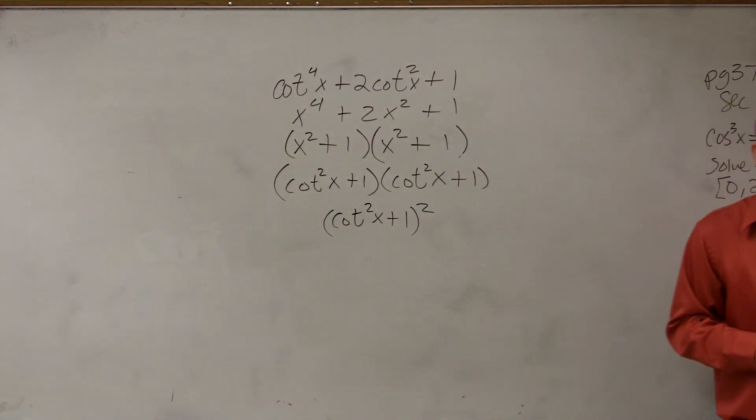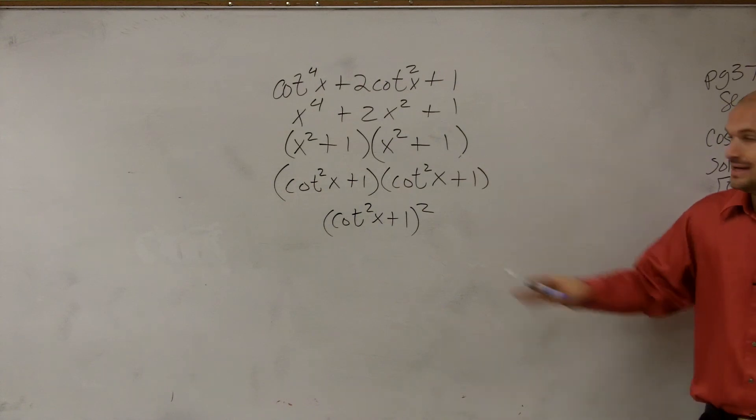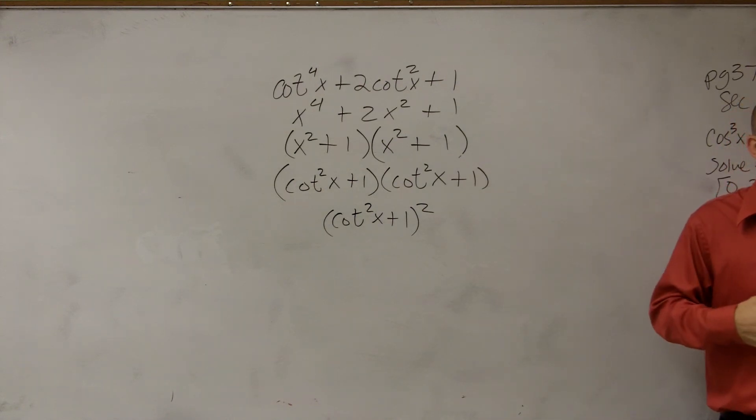Then I need to go over to my trigonometric identity, or my Pythagorean identities, which we also wrote up top, right, which I said was very important for you guys to know. Because now you know cotangent squared plus 1 is now going to equal?